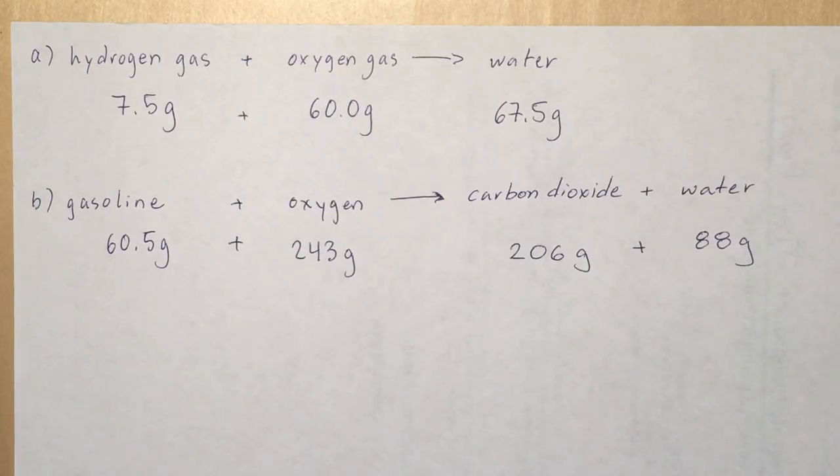On the other hand, when we look at the next example, this one is not consistent because it says that gasoline here is completely reacting with oxygen, the 60.5 grams of gasoline with the 243 grams of oxygen to give us only 206 grams of carbon dioxide and 88 grams of water.